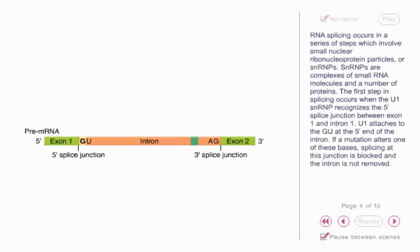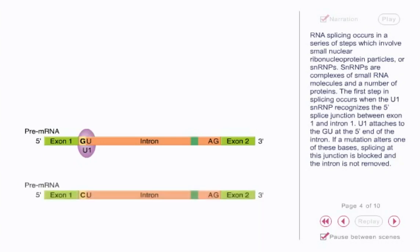RNA splicing occurs in a series of steps which involve small nuclear ribonucleoprotein particles, or SNRPs. SNRPs are complexes of small RNA molecules and a number of proteins. The first step in splicing occurs when the U1 SNRP recognizes the 5' splice junction between exon 1 and intron 1. U1 attaches to the GU at the 5' end of the intron. If a mutation alters one of these bases, splicing at this junction is blocked and the intron is not removed.